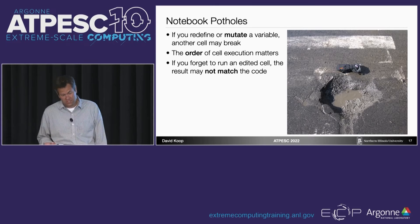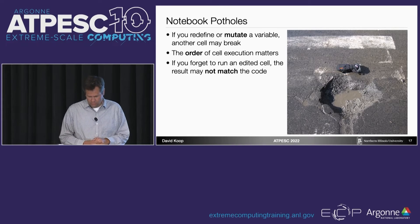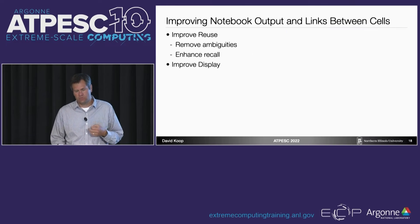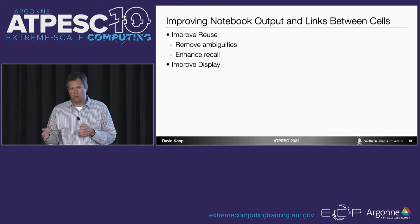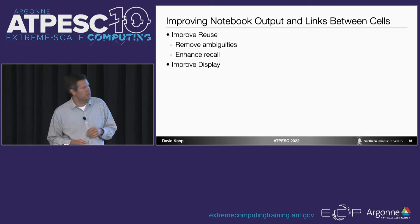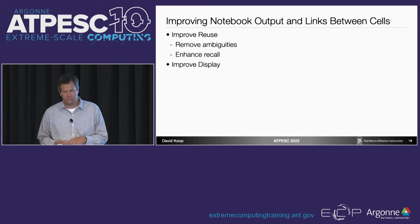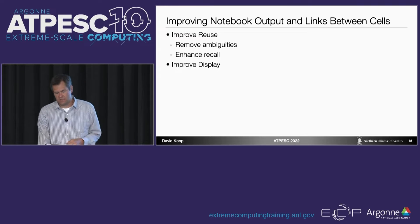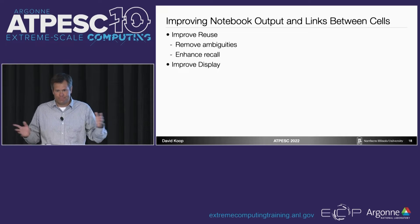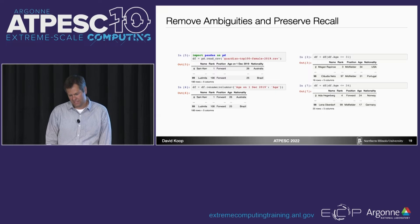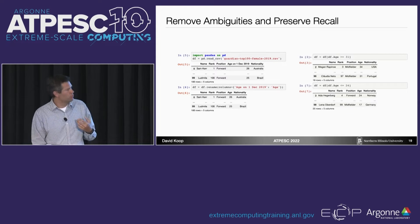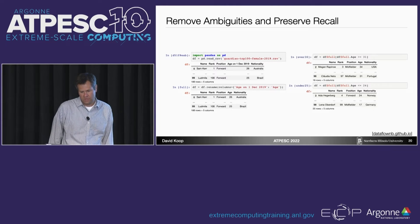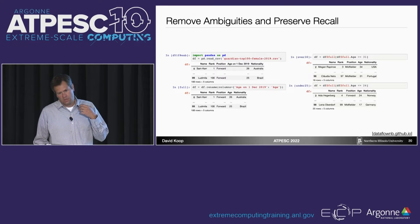Some key notebook pitfalls: if you redefine or mutate a variable you can break a cell; the order of cell execution matters; and if you forget to run an edited cell the result may not match the code. Research has been focused on improving the link between outputs and code — the links between cells — to improve reuse, reproducibility, remove ambiguities, and enhance recall when returning to a notebook. One idea is making things more dataflow-like, where cells are linked via variable names using a tagging mechanism indicated by a dollar symbol.